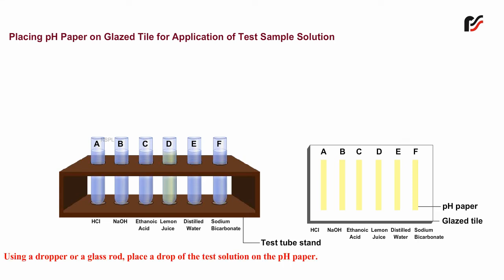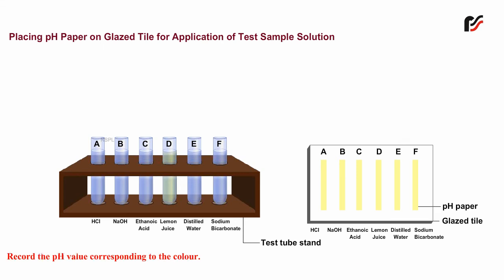Using a dropper or a glass rod, place a drop of the test solution on the pH paper. Note the color developed on the pH paper and compare it with the color chart of the pH paper. Record the pH value corresponding to the color.